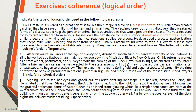The second paragraph: After his arrival in Illinois at the age of 21, Abraham Lincoln tried his hand at a variety of occupations. In 1830, he worked as a flatboat man, making a voyage down the Mississippi River to New Orleans.